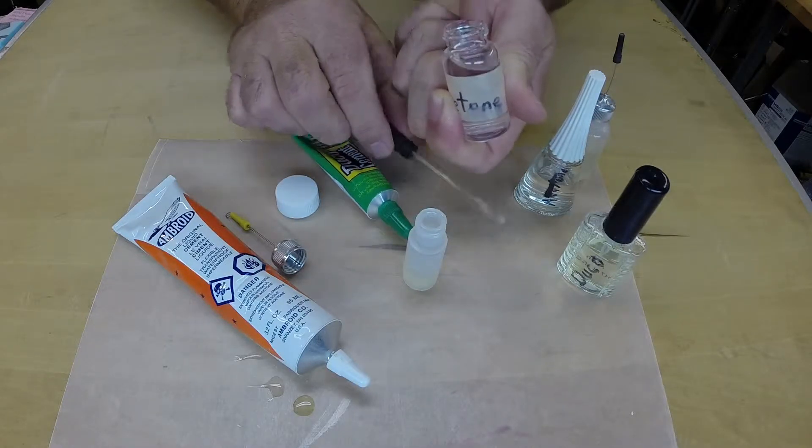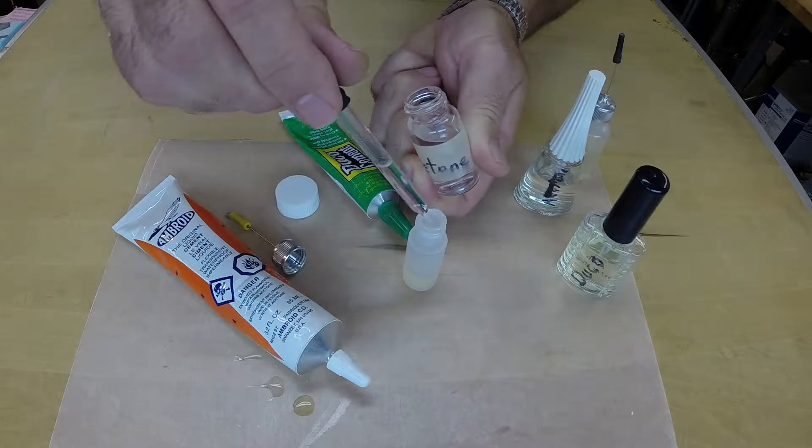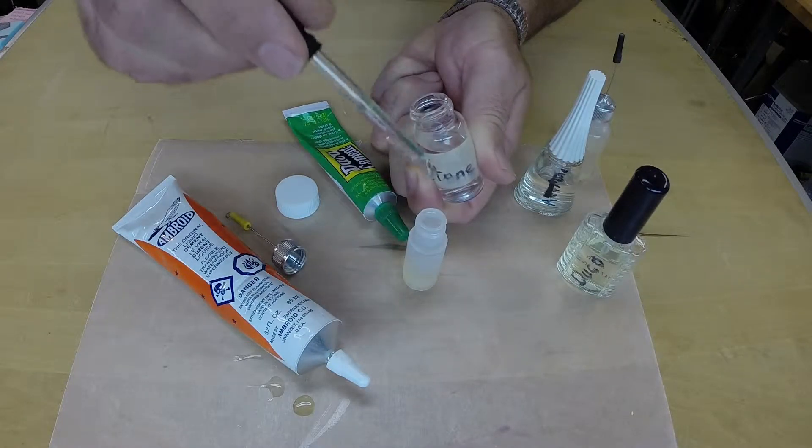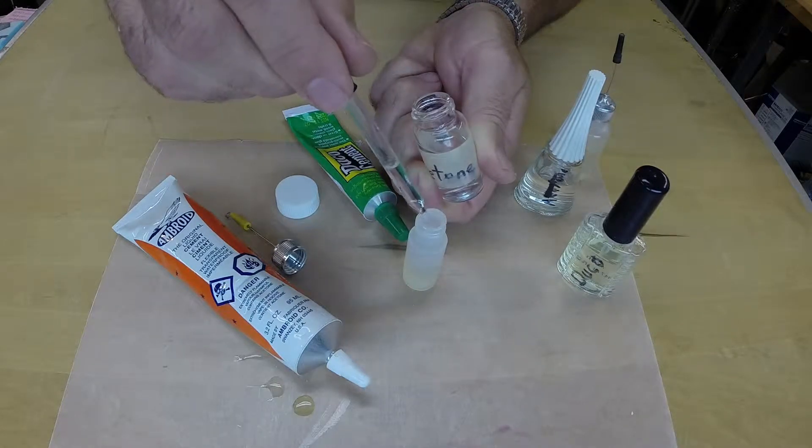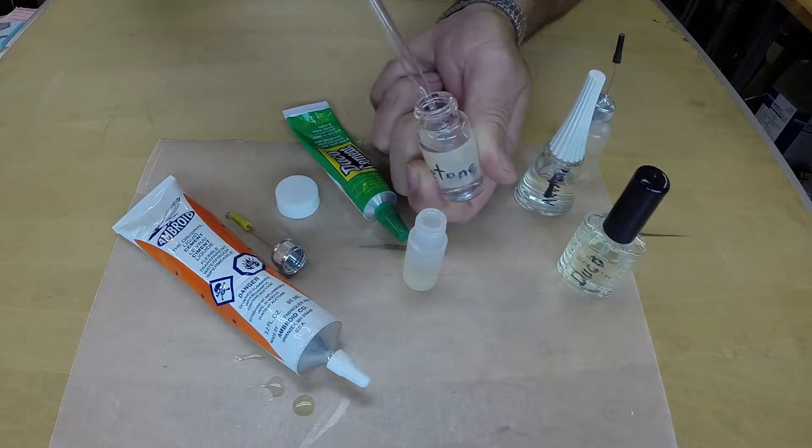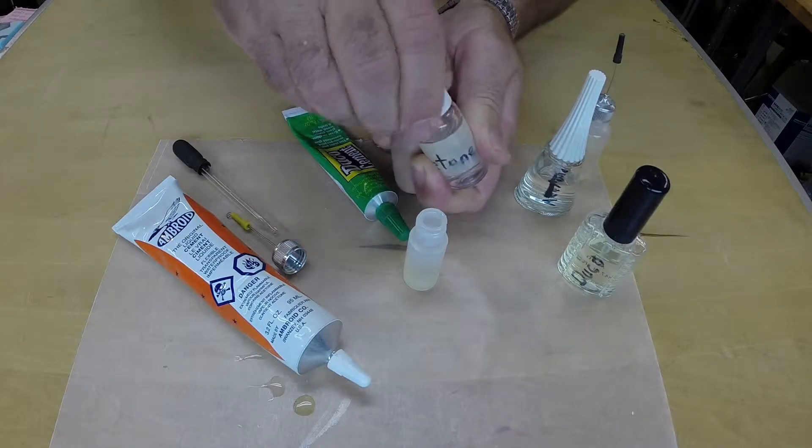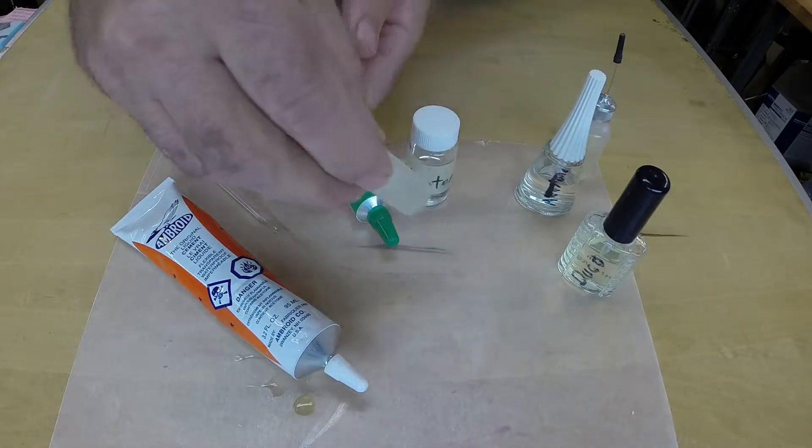As you use the glue, the acetone will evaporate and the glue will thicken. When this happens, just add more acetone until the desired viscosity is reached. Please remember that nail polish remover is a nice name for paint remover. If any is spilled on a painted or plastic surface, that surface will be affected if not dissolved. Acetone also is flammable, so use caution when handling it.